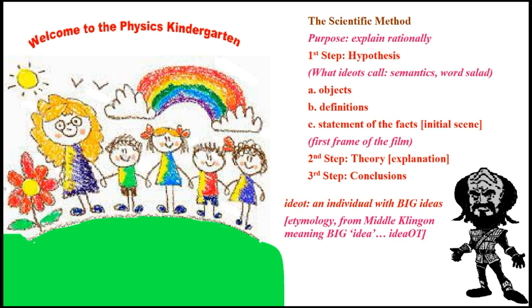The real scientific method has three steps: hypothesis, theory, and conclusions. The hypothesis is what everybody skips. You have to present the objects first — mathematicians, aether theorists, electric universe people, and mainstreamers never present the objects. They never start by pointing to the object they're going to use in their theory. You also need strong definitions that you can defend. If you can't defend your definitions, your definition is worthless and you have to go back to the drawing board.